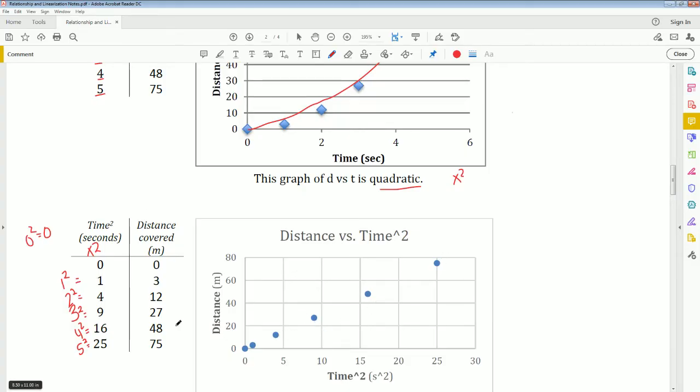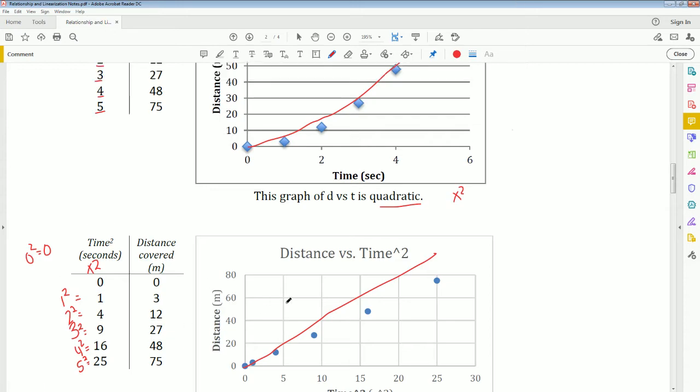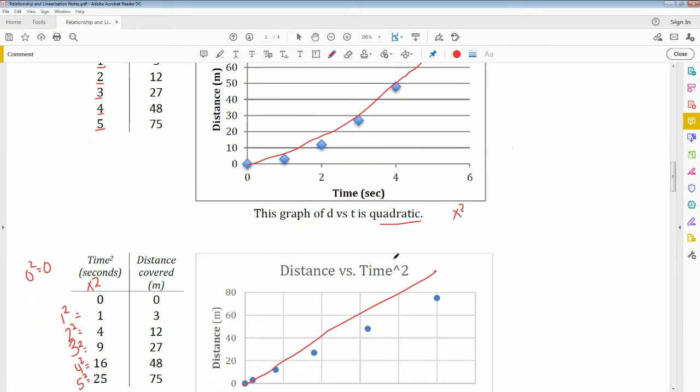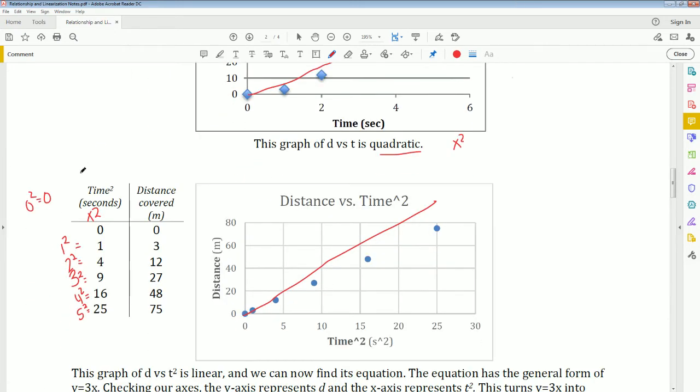And the distance, the values here remain the same. Notice that this is now linear. So this, from here to here, they adjusted the x value to linearize it. That is the process of linearization.